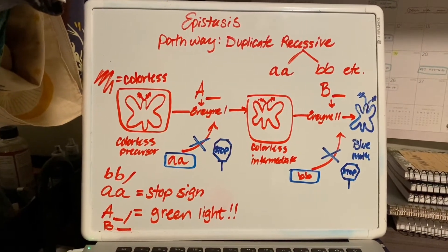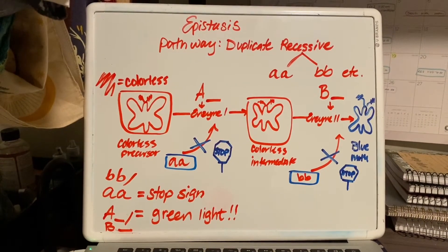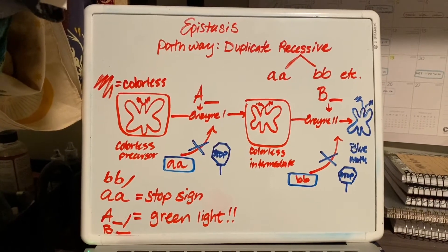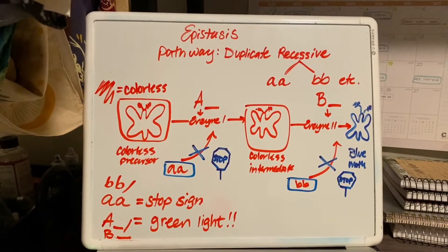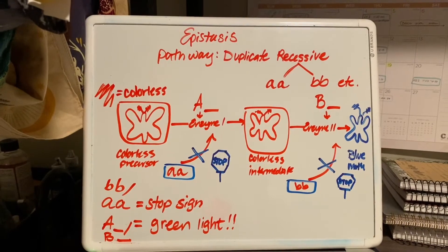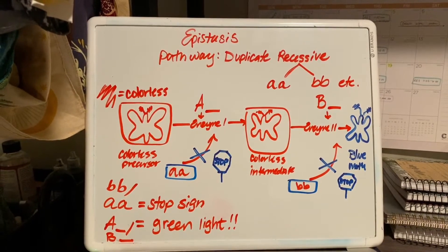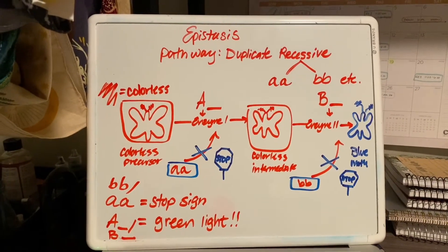And the only way that it moves through this pathway is by enzyme activation. So enzyme 1 can only be activated with a heterozygous or homozygous dominant allele pair.